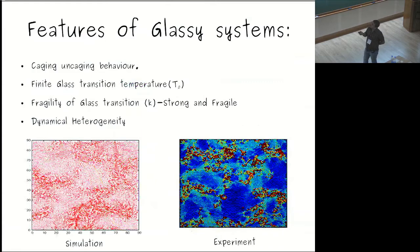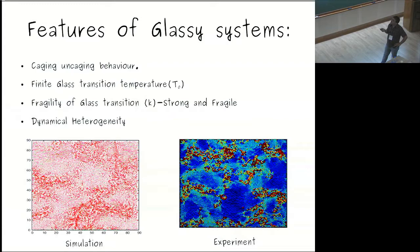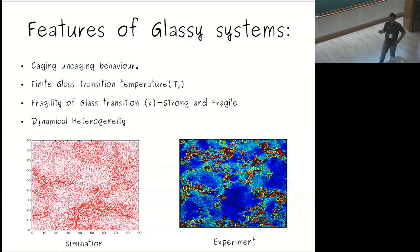To summarize the features of a glassy system: before the glass transition, it shows caging behavior of the particles, which is why you saw the plateau-like behavior in the MSD. It has a finite glass transition temperature and a fragility. If the fragility is very low or close to zero, one calls it a strong glass; if the fragility is very high, one calls it a fragile glass.